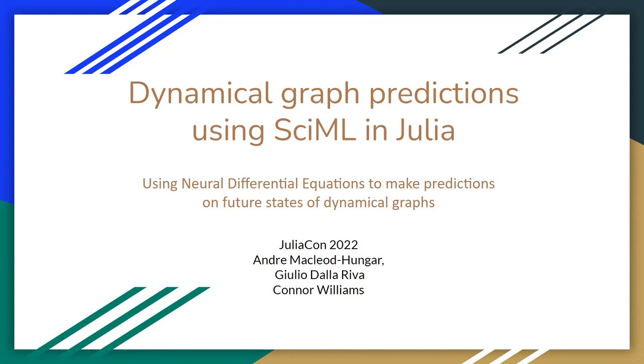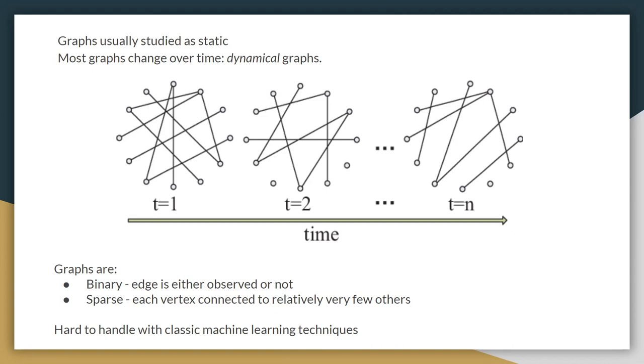Hello and welcome to this JuliaCon 2022 lightning talk. My name is Anjan Rikard-Hanker and I have a couple of co-speakers I'd like to credit, Julia Dallariva and Conor Williams, both of whom helped a lot with this project and came up with a lot of the ideas that you see presented today. It is dynamical graph predictions using SciML and Julia, more specifically using neural differential equations to make predictions on future states of dynamical graphs.